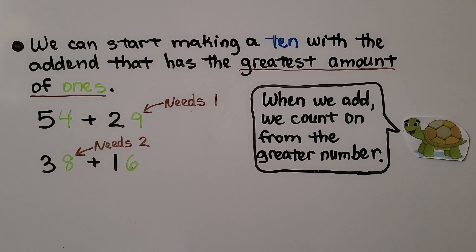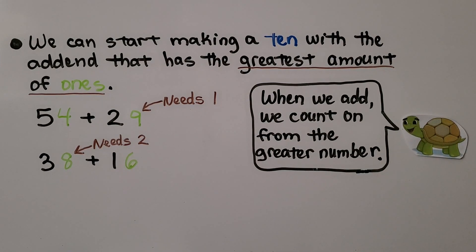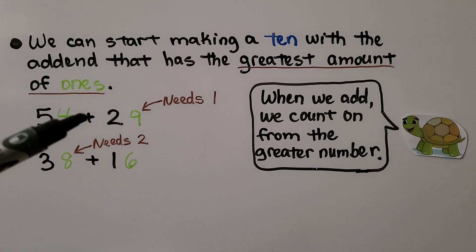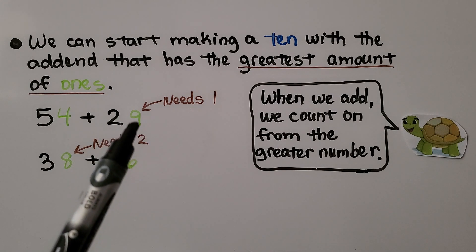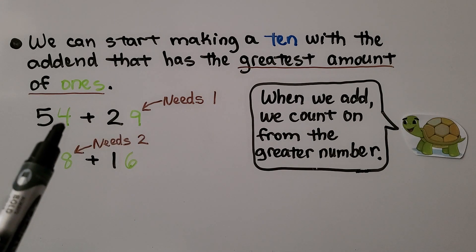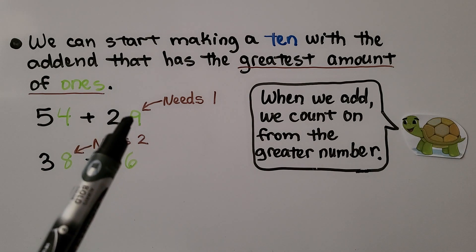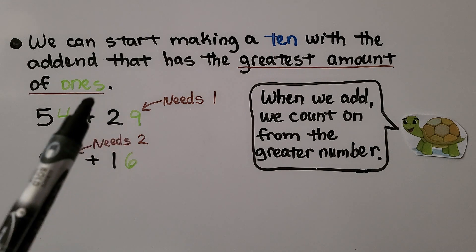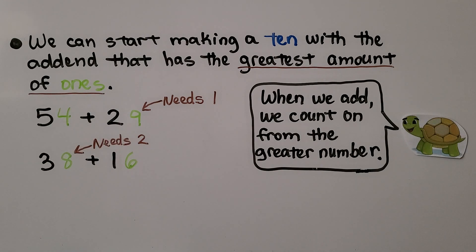We can start making a ten with the addend that has the greatest amount of ones. Here we have 54 plus 29. This 29 has nine ones. The 54 only has four ones. This nine only needs one to make a ten. So we start with this one and we take a one from the four. In 38 plus 16, this eight only needs two to make a ten. There are more ones here than here. We can take two from that six to make a ten. And when we add, we count on from the greater number. So we can start making a ten with the addend that has the greatest amount of ones.